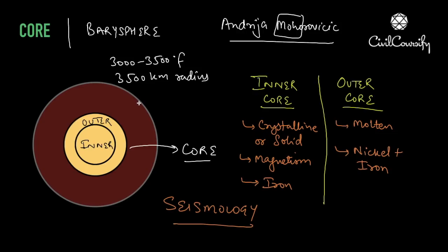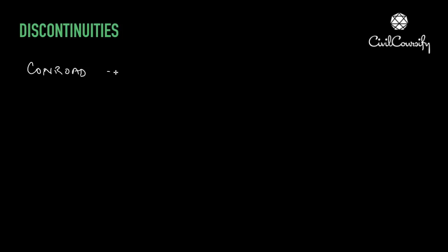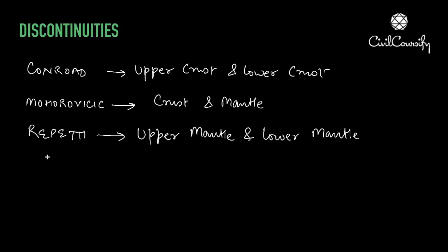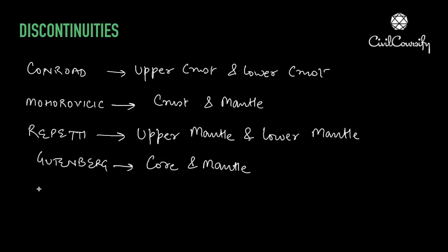There are several important discontinuities within the earth's interior. The first is between the upper crust and the lower crust. The second is the Mohorovičić discontinuity, between the crust and the mantle. The third is between the upper mantle and the lower mantle. The fourth is the Gutenberg discontinuity, between the mantle and the core — named after Benno Gutenberg, who helped Charles Richter design the Richter scale. The fifth is the Lehmann discontinuity, between the outer core and the inner core.